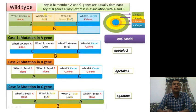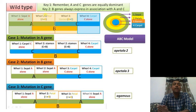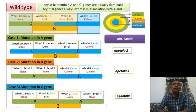There are two key points to keep in mind. First, gene A and gene C are equally dominant. Second, gene B gets expressed only in association with either gene A or gene C — it cannot express independently. Let us now see what happens in a wild type flower.